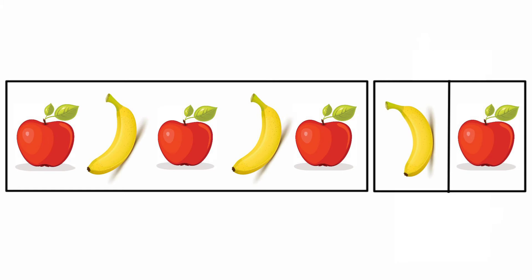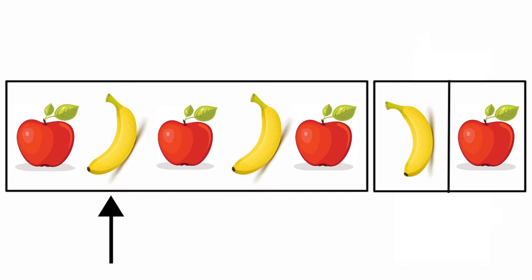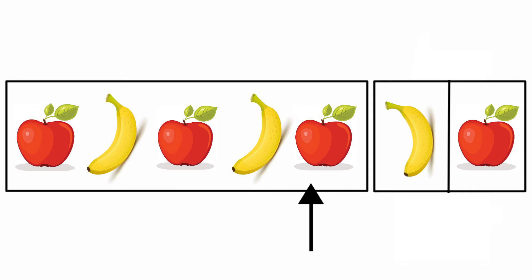Then look at the next picture. Apple, banana - it's the first set of pattern. Here we need to complete the pattern fully. Apple, banana, apple, banana, apple - and the next one is banana. So here we need to take banana to complete the pattern.